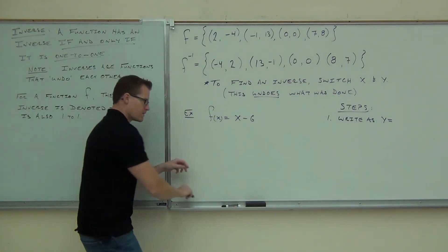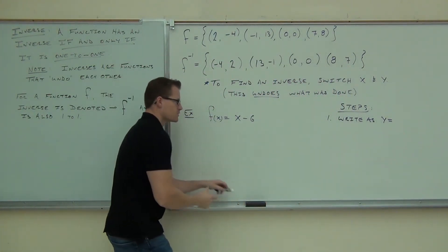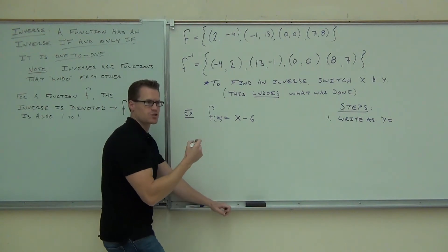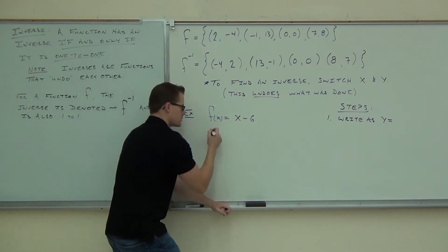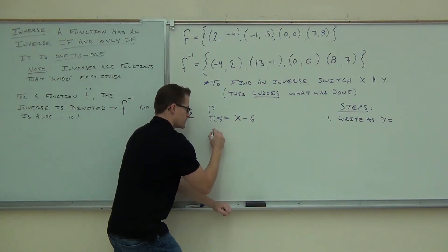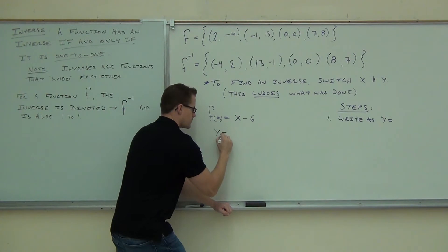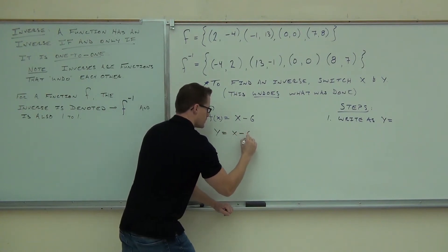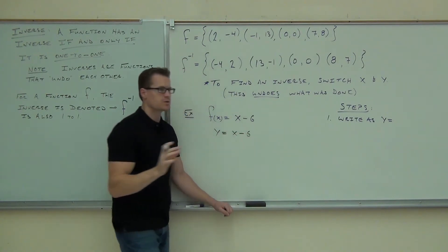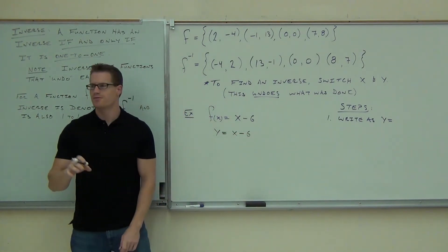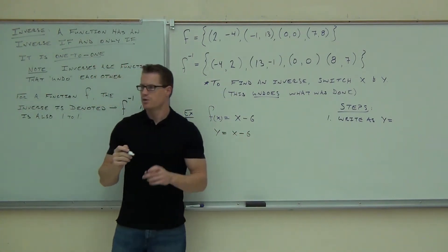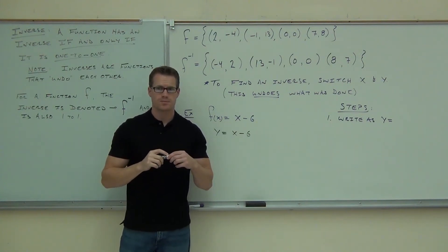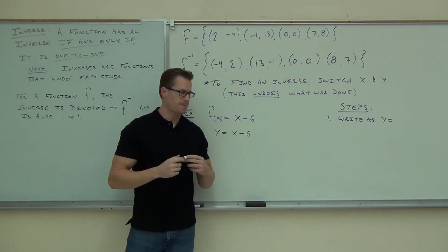So if you're on the board, instead of F of X equals X minus 6, you'd have Y equals X minus 6. That's all I'm doing — I'm switching my F of X with my Y. You okay with that so far?